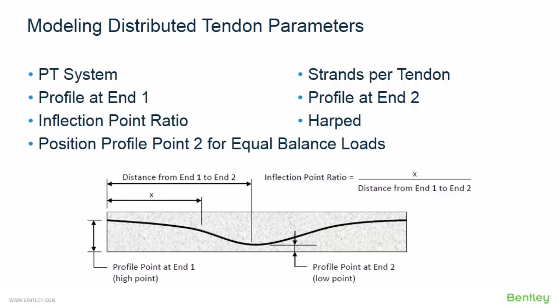All PT systems are available in the tendon criteria through the criteria menu and can be specified here. You can also specify the number of strands via the strands per tendon property. After that, select the elevation at end 1 or end 2, which defines the vertical distance from the elevation reference to the centroid of the tendon strand. You can also specify your inflection point ratio, which determines the distance x from end 1 to where the tendon curvature changes sign. The inflection point ratio is the ratio of x to the distance from end 1 to end 2; a value of 0.2 is commonly used.